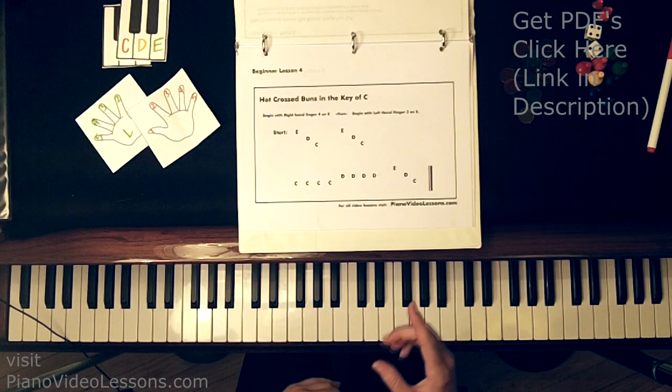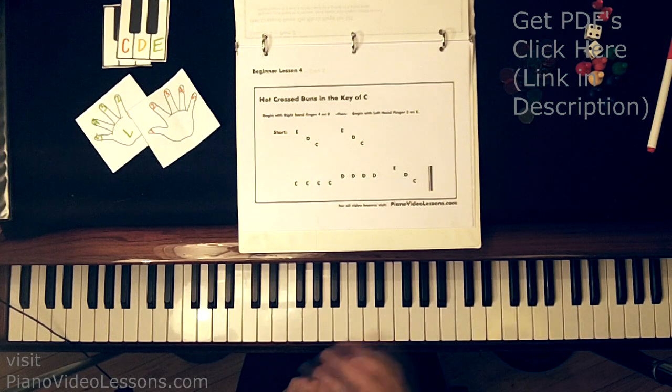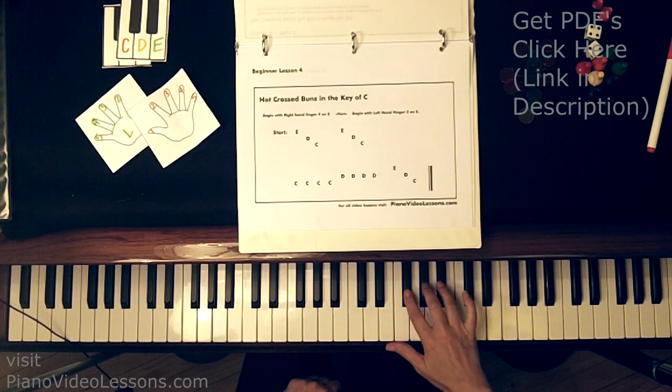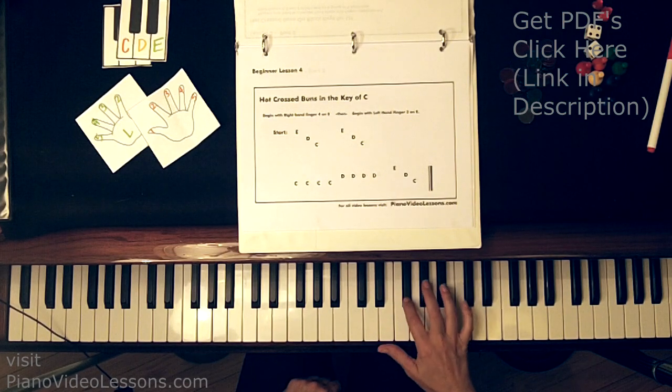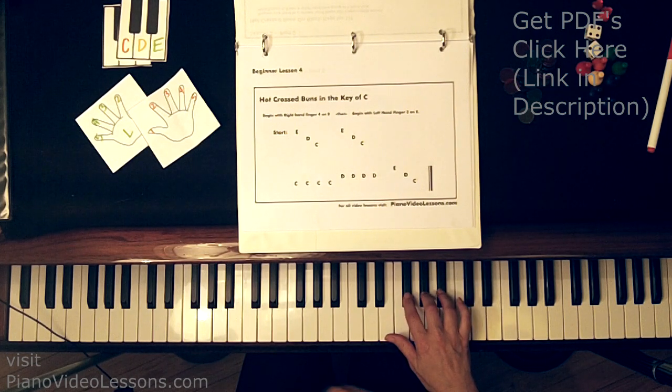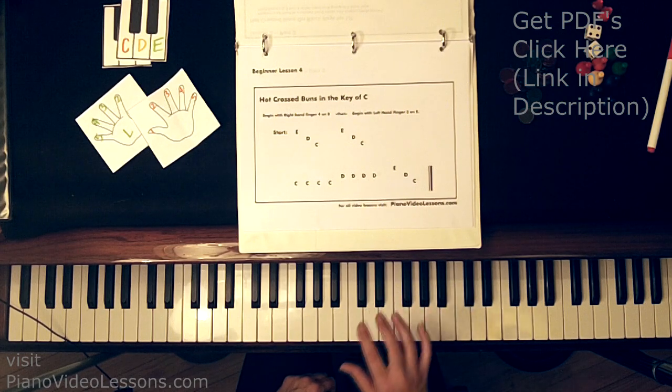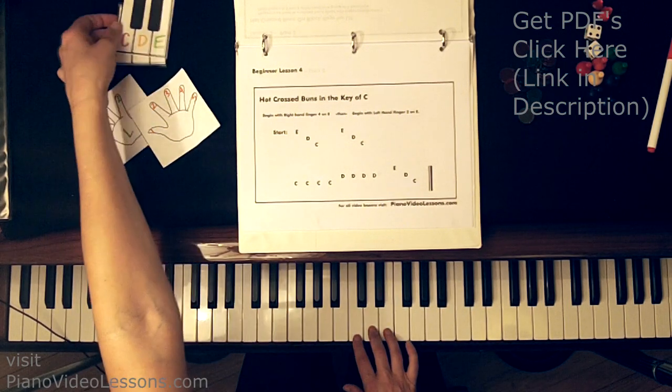And we're going to be playing first with our right hand. So if you did lesson 3, you already know how to play hot cross buns on black keys using fingers 4, 3, and 2. So essentially what we're going to do is transpose this song off of black keys and onto white keys.